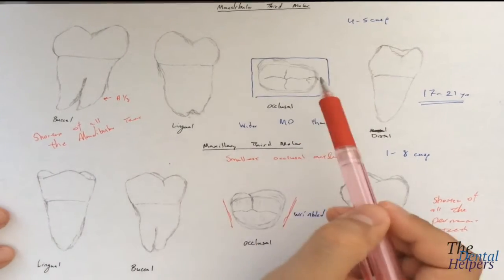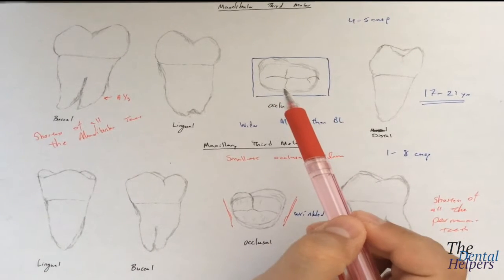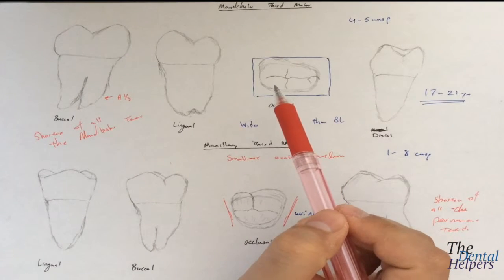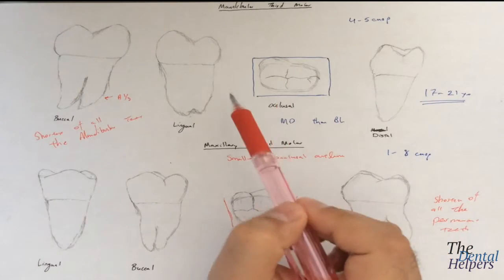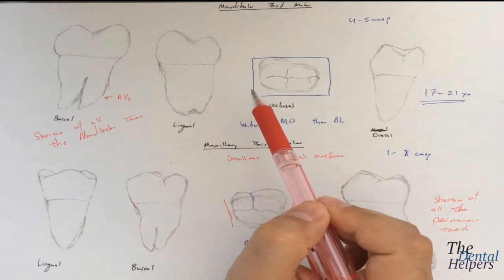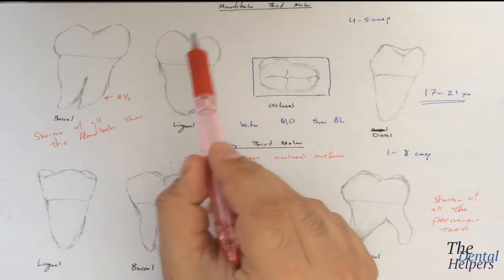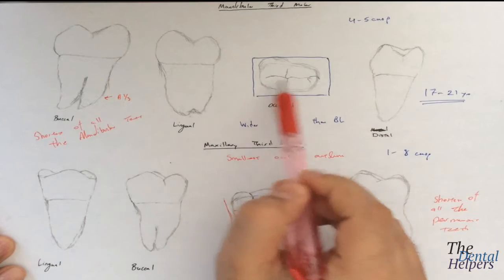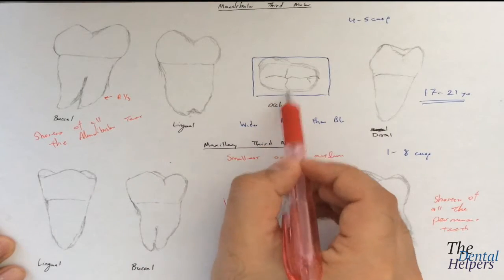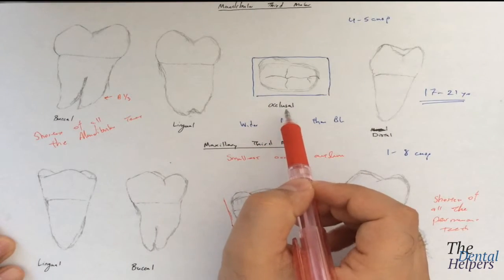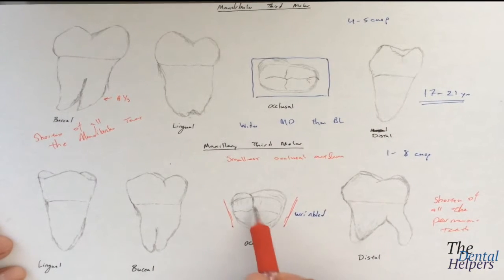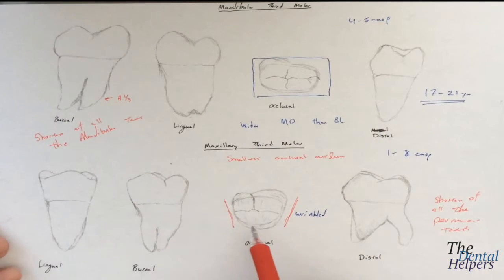The mandibular third molars often resemble the second molars, in the sense that the occlusal table looks a lot like the second molars with this cross sign. And as mentioned, the maxillary third is going to have the most morphological variation of the teeth.